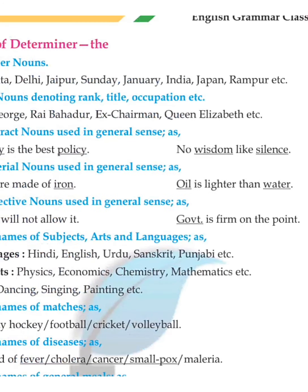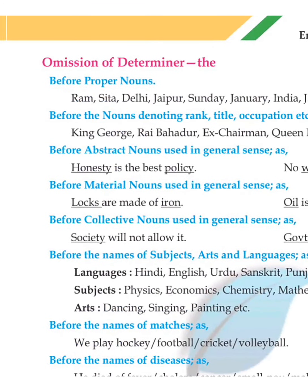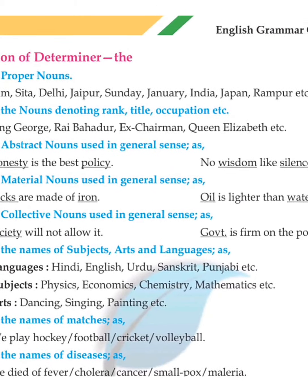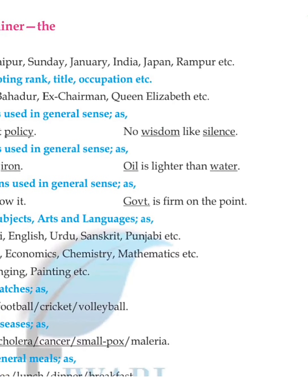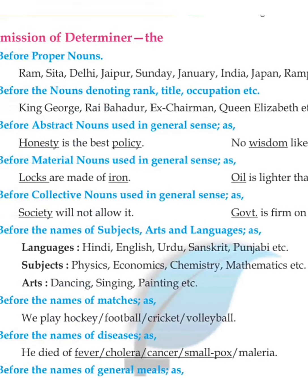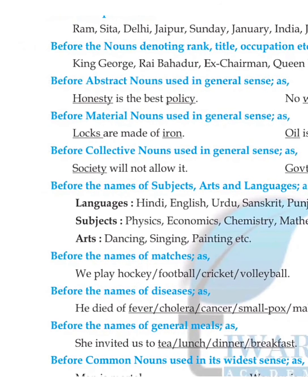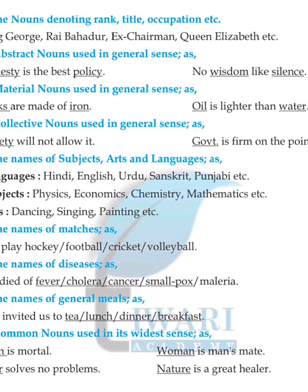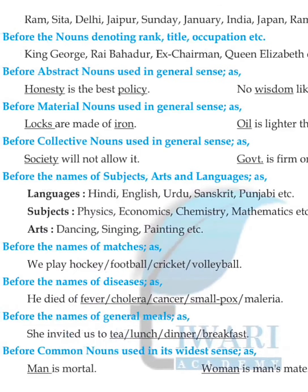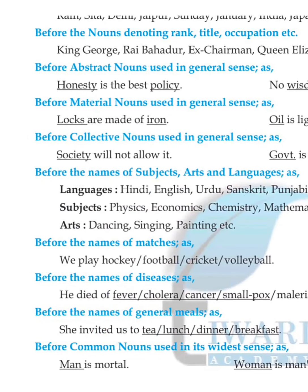'The' is omitted before proper nouns like Ram, Sita, Delhi, Jaipur, Sunday, January, India, Japan, Rampur. Also before nouns denoting rank, title, or occupation: King George Bahadur, Ex-Chairman, Queen Elizabeth, etc. And before abstract nouns used in a general sense.